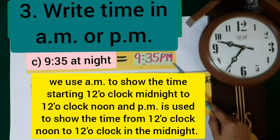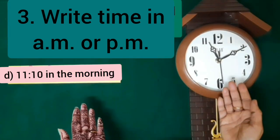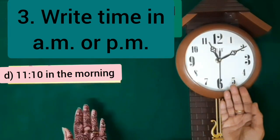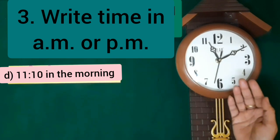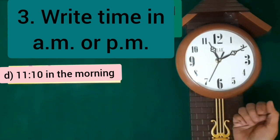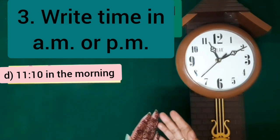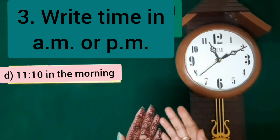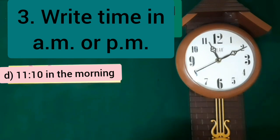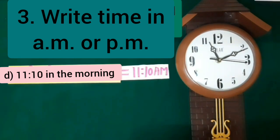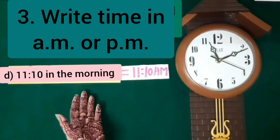Moving to the next part D, it is 11.10 in the morning. This time comes before 12 noon, and the time before 12 noon is shown by using a.m. So 11.10 in the morning will be written as 11.10 a.m. — that is the answer.